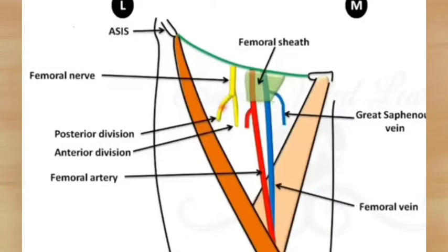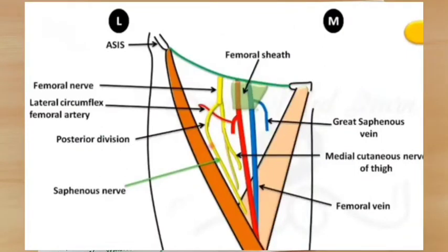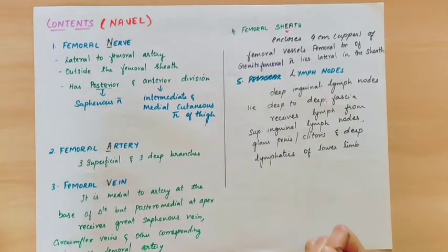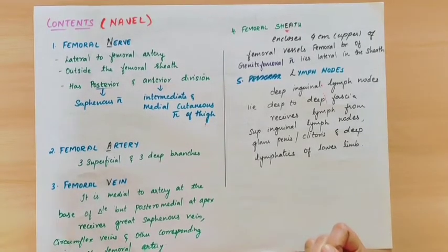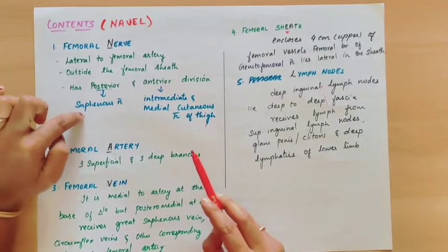The femoral nerve divides into anterior and posterior divisions. The anterior division gives the intermediate and medial cutaneous nerves of the thigh, which supply the skin. The posterior division gives the saphenous nerve branch. This is all about the femoral nerve.